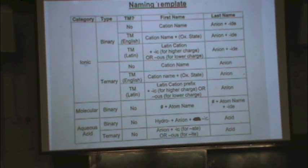And then you see the ionic has binary and ternary, and so does aqueous acid. So there's the types. What I do, and now we're going to do examples momentarily. I ask myself, TM stands for Transition Metal. Is there a transition metal? Yes or no. That's significant in how you name it. Because some transition metals can be named either in English or in Latin.